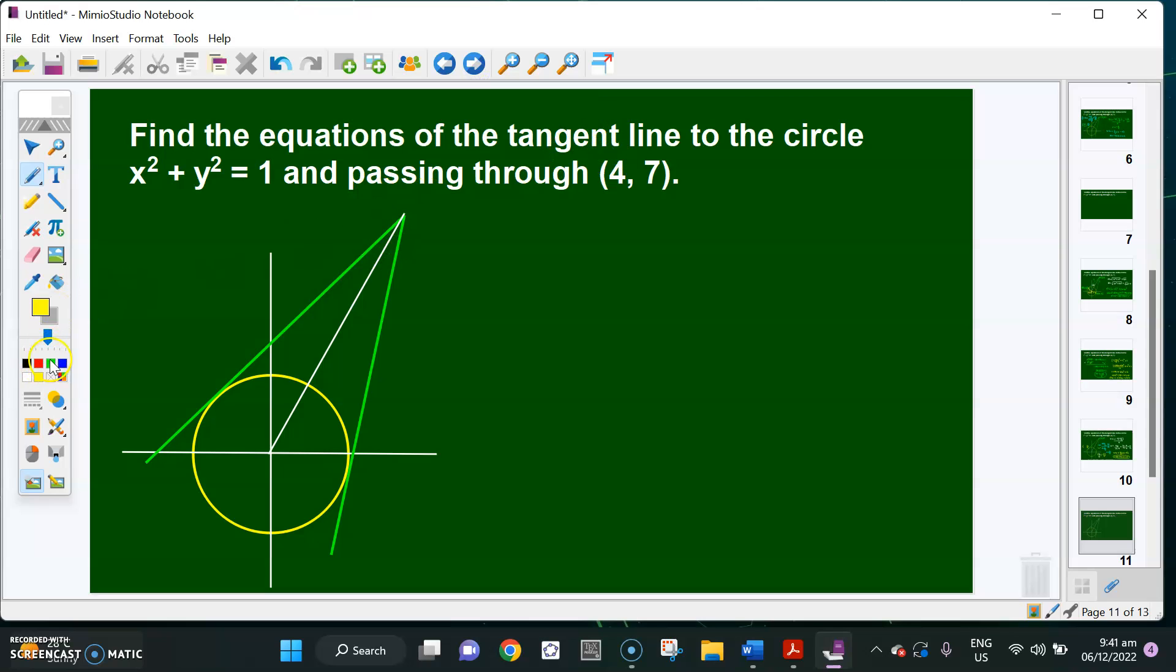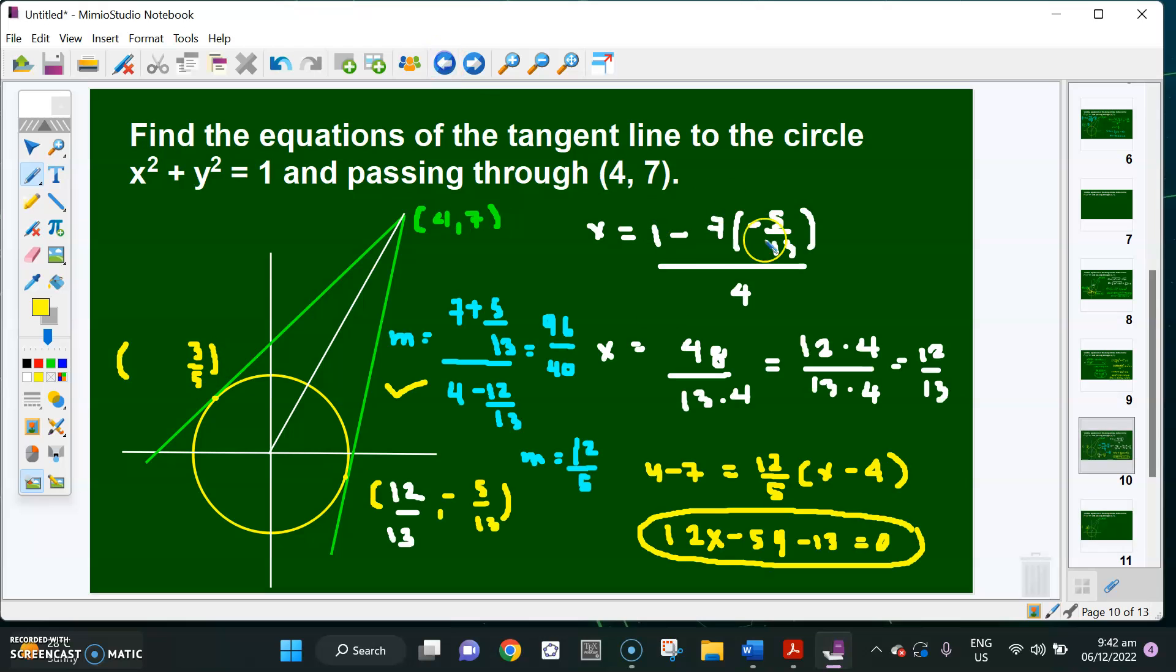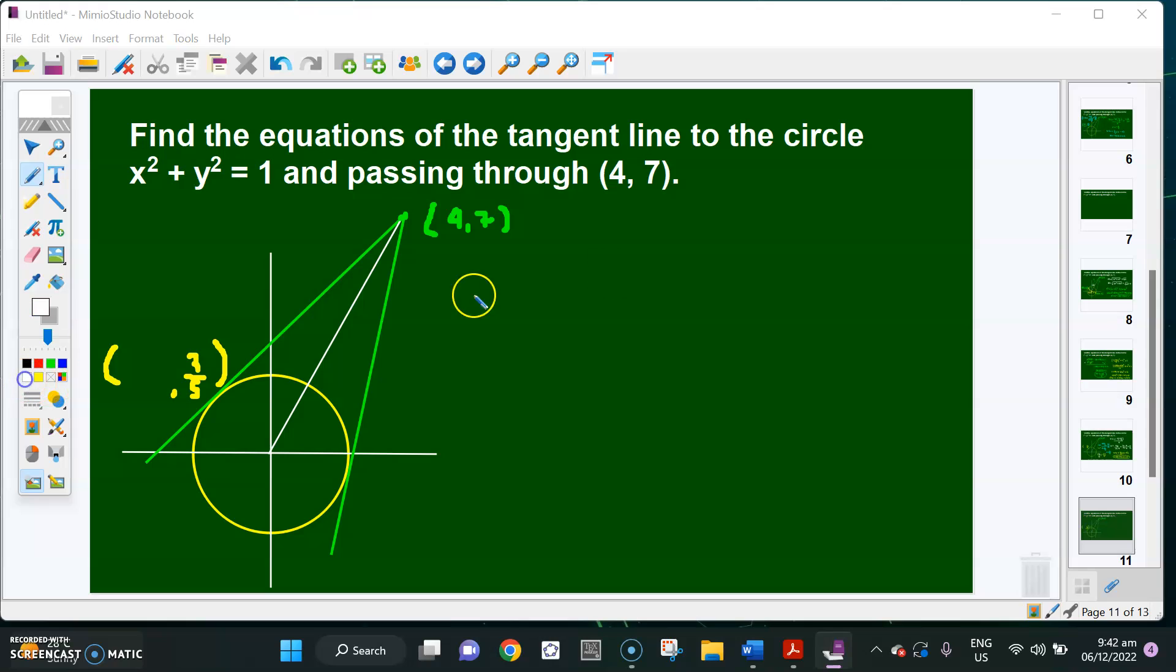Next, the other side. Again, this is (4, 7). I have here the point with y-coordinate 3/5. I need to get the abscissa. So again, substitute 3/5 into the equation. That is x equals (1 minus 7 times 3/5) over 4. This one will become (5 minus 21), which is negative 16 over 20. The x-coordinate is negative 4 over 5. So negative 4 over 5.